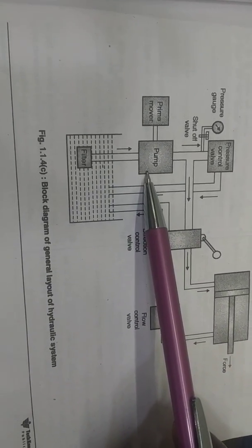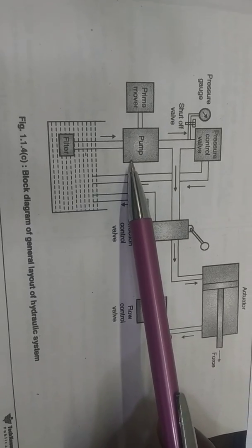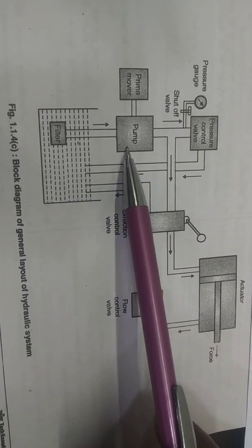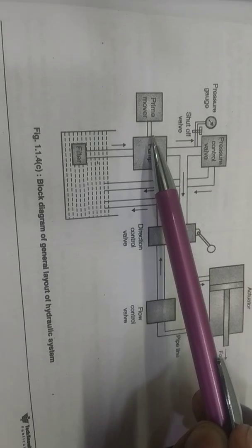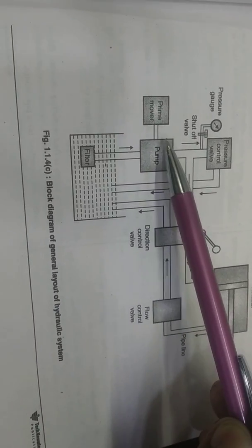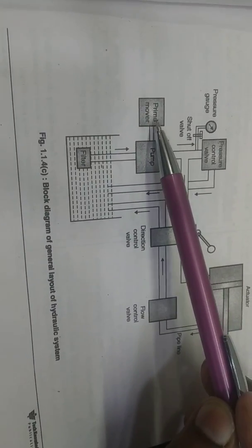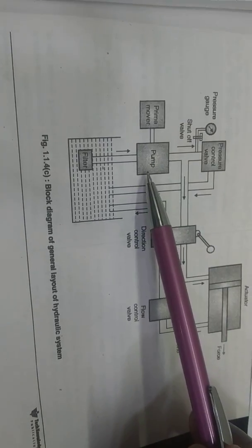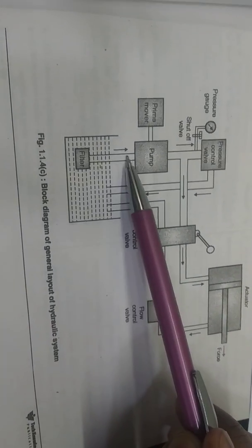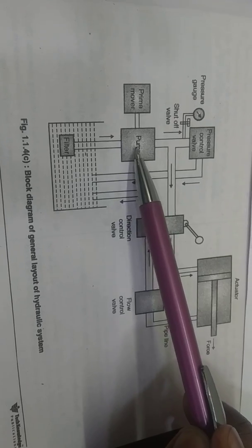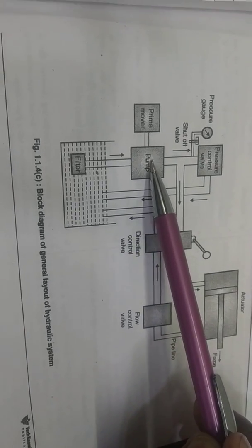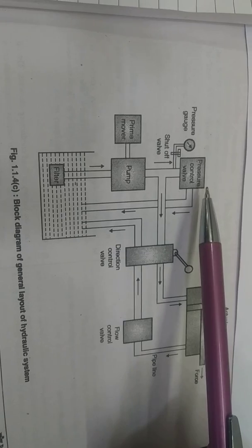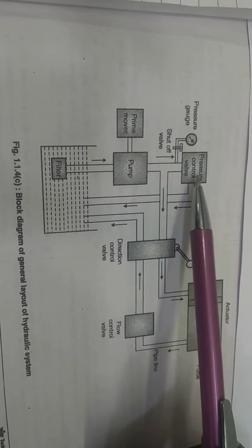The next component is the pump. The pump is the heart of the hydraulic system. It increases the pressure of the oil. The shaft of the pump is coupled to the shaft of the prime mover. When the prime mover starts, the pump sucks the oil from the reservoir, increases its pressure, and supplies the pressurized oil to the system.